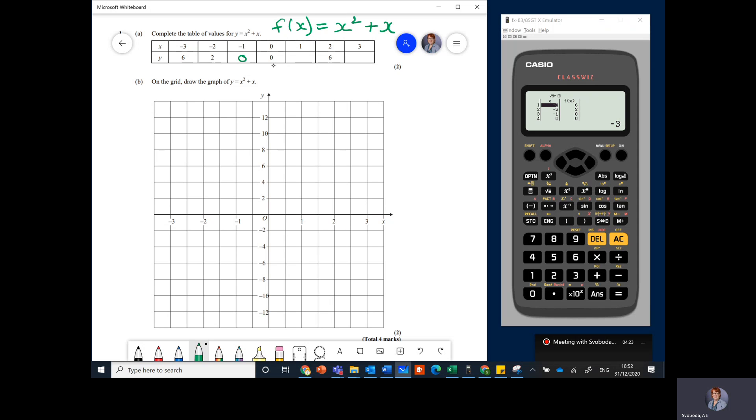When x is naught, y is naught. Yes, we can see that. Now to get the rest we'll just have to scroll down. So one goes with two, two goes with six which we know, and three goes with twelve. And that's it.